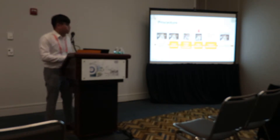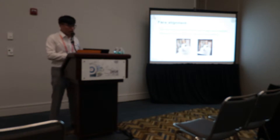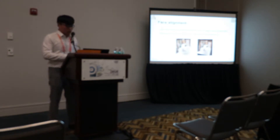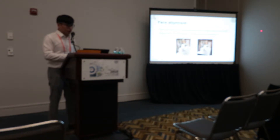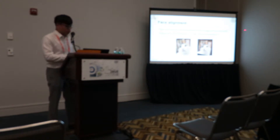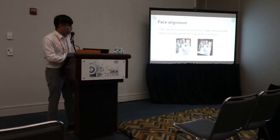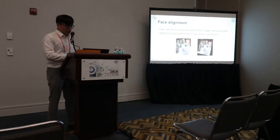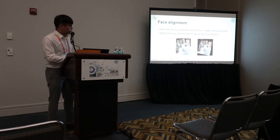The next step is face alignment. Cats have various postures when their images are acquired. The facial landmarks are identified using model 2, and the facial images are then rotated at the center of the image to make the line connecting the eyes horizontal.